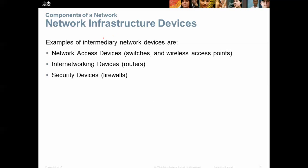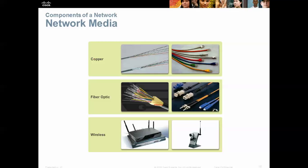Then you have network infrastructure devices: switches, wireless access points, routers, and security devices such as firewalls. Those are your intermediary or interconnected devices — your infrastructure. As for how we connect: copper wiring is the most common and basic — that's our Ethernet with RJ-45 connectors. Old phone systems used RJ-11 connectors but still used copper wire. It is the most inexpensive and common way to connect devices.